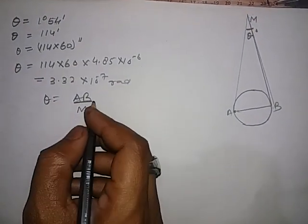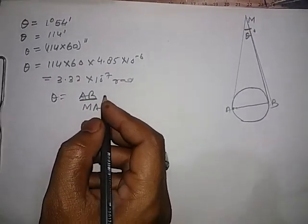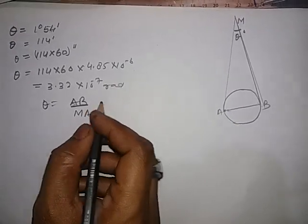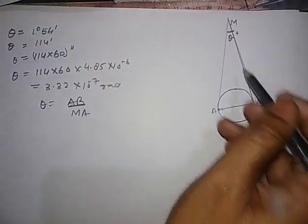MA arc upon radius AB. Now, what we have to calculate? Distance means this MA.